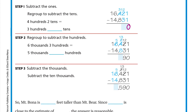First, subtract the ones: one minus one is zero. Then the tens: two minus three — we can't, so we regroup. The four hundreds becomes three hundreds, and we take ten tens, giving us twelve tens total. So the four becomes three and the two becomes twelve. Twelve minus three is nine.